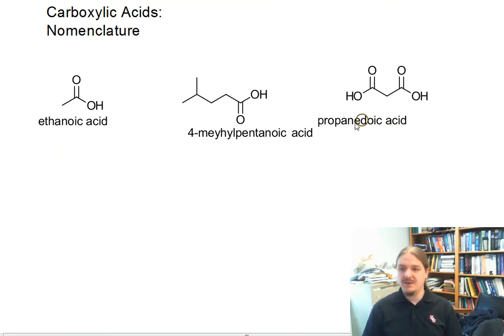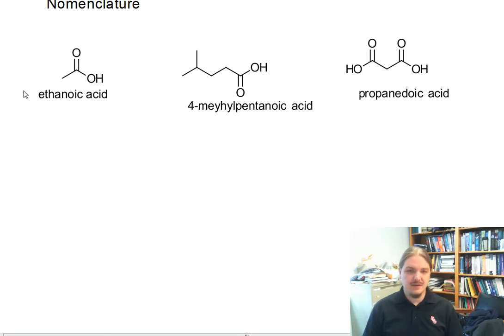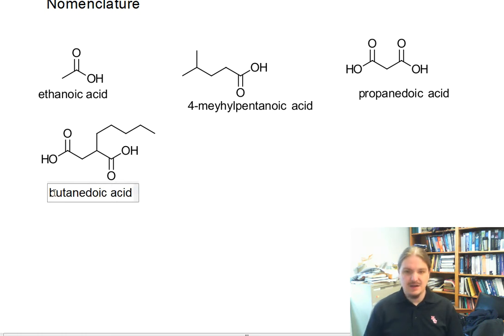And if the carboxylic acid functional group has the highest numbering priority, even though it feels like it's not part of the longest chain of carbon atoms, this molecule here is still some sort of butanedioic acid. And it has a 2-pentyl butanedioic acid.